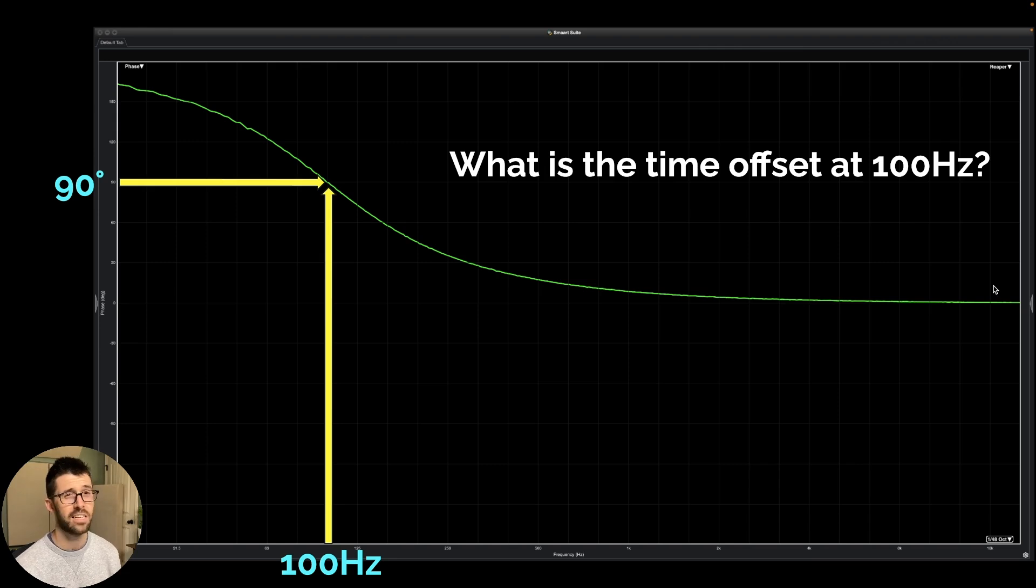So if we triangulate that, now I have down to the bottom 100 hertz and the arrow's going up to the graph. And then I can now look, well, that corresponds here on the side with 90 degrees. So I now have found that 100 hertz is 90 degrees offset from where it originally was.